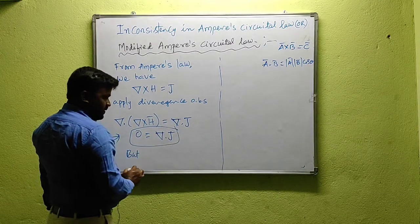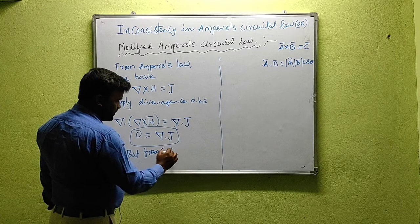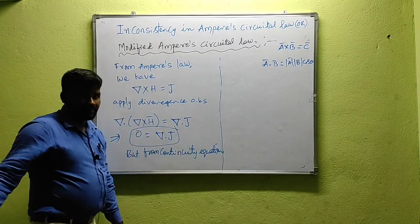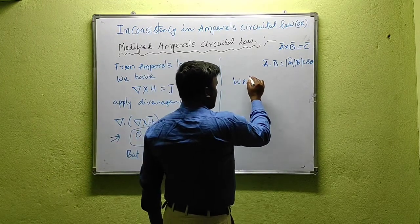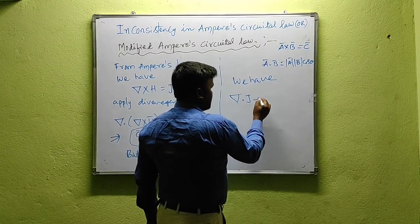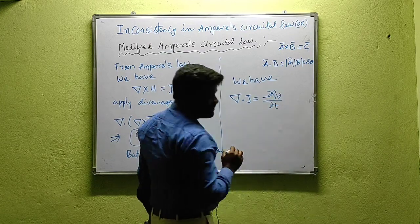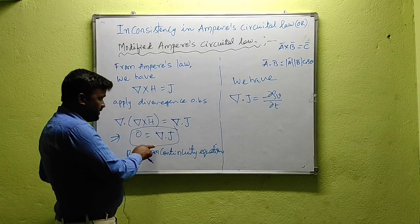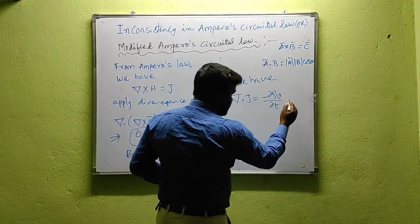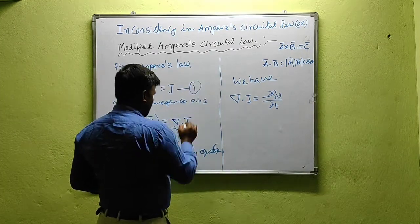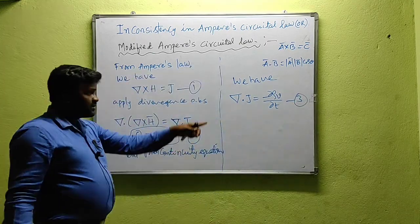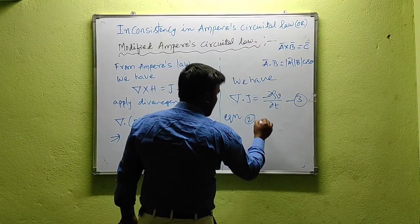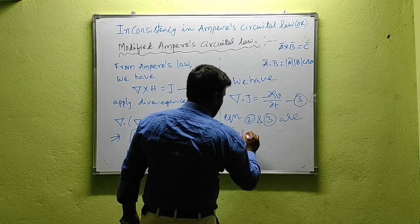But from the continuity equation, we have del dot J equal to minus del rho_v by del t. So we have: del dot J equals minus ∂ρv/∂t (equation 2), and del dot J equals 0 (equation 3). If you observe equations 2 and 3, these two equations are incompatible.